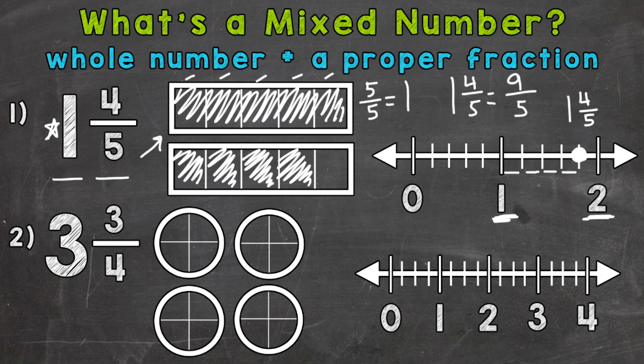We can look at our model and count nine fifths filled in — one, two, three, four, five, six, seven, eight, nine fifths. So we can see that one and four fifths is equivalent to nine fifths. There's another way to convert between mixed numbers and improper fractions, but that's a topic for another video. I'll drop links to improper fractions and other fraction topics down in the description.